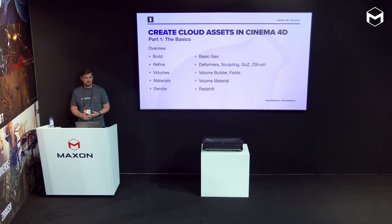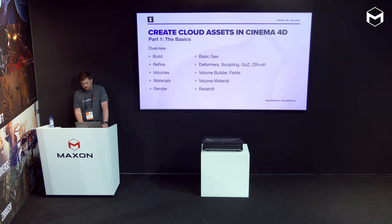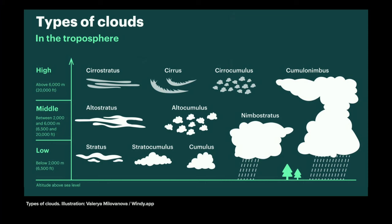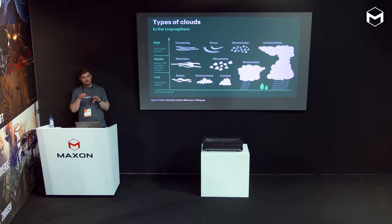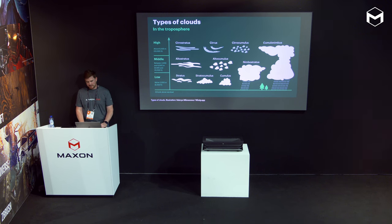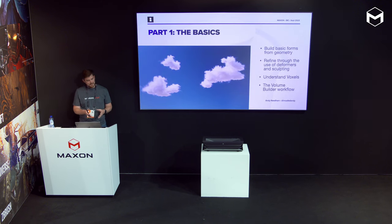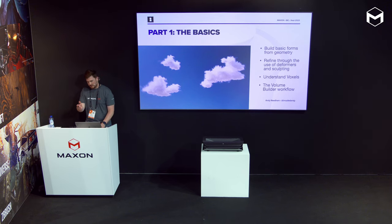It's all rendered with volume material, and we're going to use Redshift. Any renderer that can render volumes will work, but Redshift is now the standard in Cinema 4D. I'm not going to go into the science of this, but there are so many different types of clouds. We're going to be focusing on the stratocumulus and cumulus ones — the more fluffy clouds with the flat base. There's more of a stylistic look to them. So let's just see where we get to.